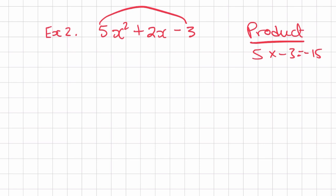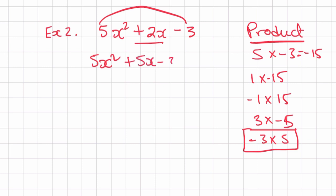List all the different ways we can get 15. When you add those two numbers, we need to find the sum of 2. So 1×15, -1×-15, 3×-5, and -3×5. Out of all these, we can see -3 and 5 gives us positive 2 when added. So let's write this: 5x² + 5x - 3x - 3.